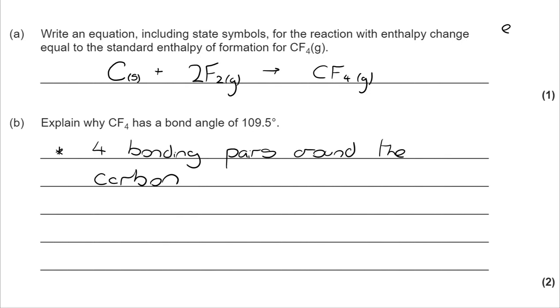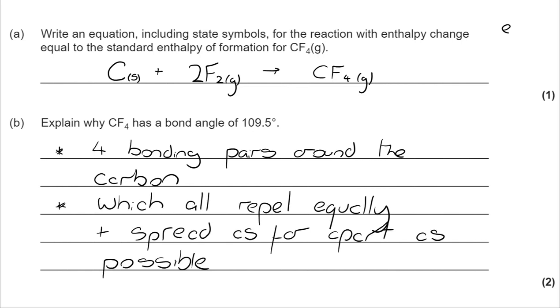The reason is that there are four bonding pairs around the carbon and each of those are going to repel equally. That means they will spread as far apart as possible. And to get as far apart as possible, they would have a bond angle of 109.5 degrees.